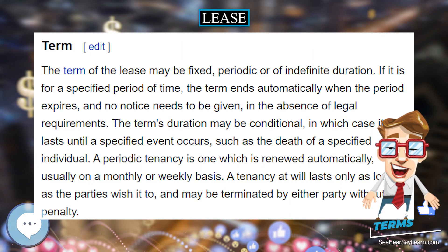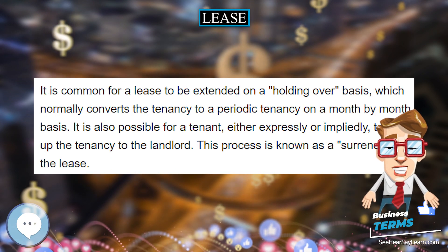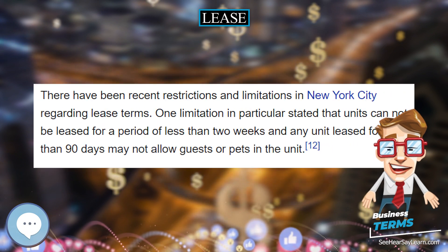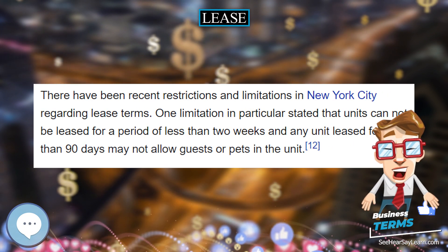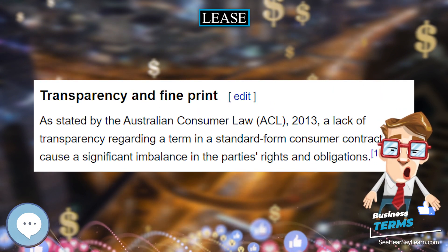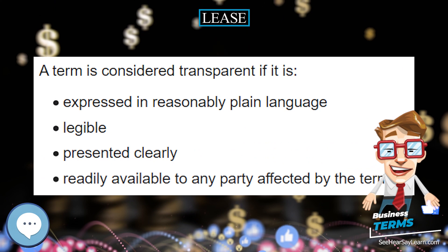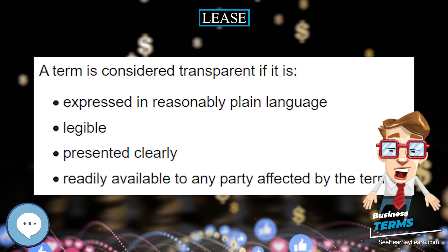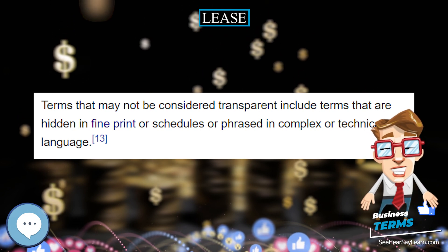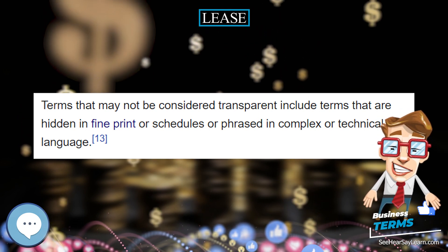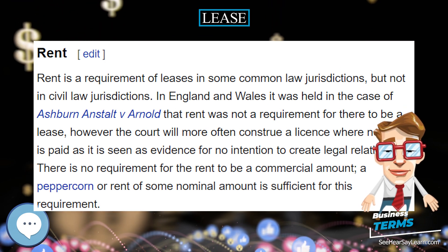In New York, the subletting of Mitchell-Lama cooperatives is illegal. Mitchell-Lama residents must maintain a primary residence to remain in their cooperative. A sub-lease can also apply to vehicles as an alternate type of car rental. In a vehicle sub-lease, a lessee or vehicle owner can assign a lease to a third party by way of contractual agreement for specific dates. Although this arrangement is not popular, it is a growing trend in the travel industry as a less expensive alternative for travelers and locals.